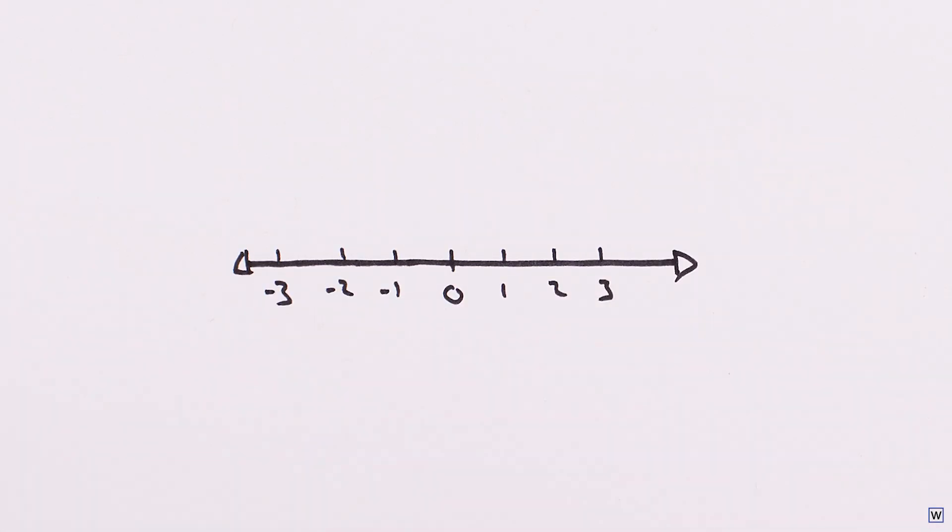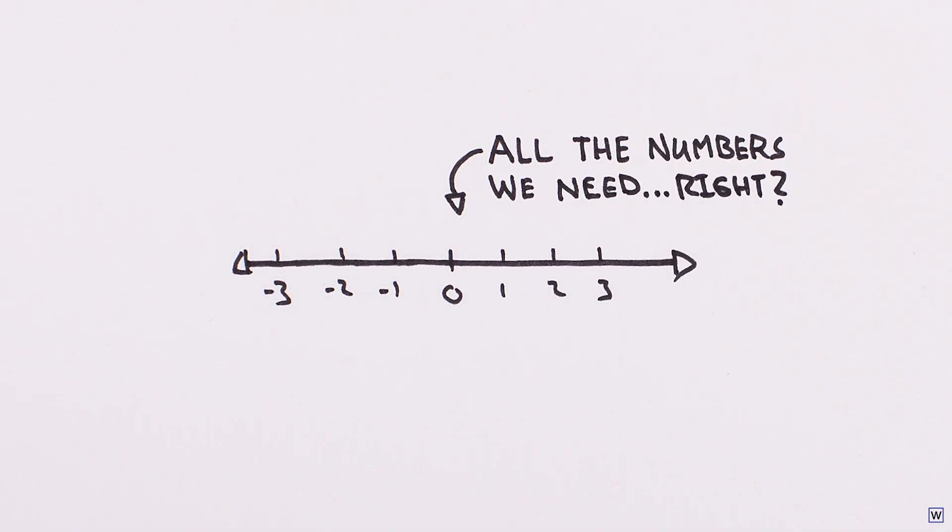However, as we saw with complex numbers, it's not always obvious when your numbers are missing something. Fortunately, there is a more sophisticated way to determine if we have all the types of numbers we need, the mathematical idea of closure.